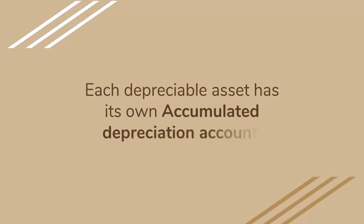Each depreciable asset has its own accumulated depreciation account. So like I said, there will be an accumulated depreciation account for vehicles and a separate accumulated depreciation account for equipment that you will credit every time. But the debit is still the same one depreciation expense account. You'll see an example too.